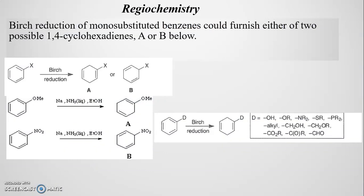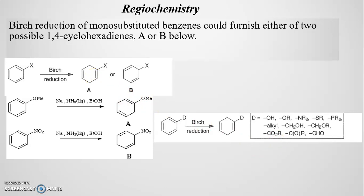The Birch Reduction of monosubstituted benzene could furnish either of two possible 1,4-cyclohexadienes, A or B. It has been found that electron-releasing groups give product of type A and electron-withdrawing groups give product of type B. Electron-releasing groups include OH, OR, NR2, SR, PR2, and alkyl. Groups such as CH2S and CH2O are actually electron-withdrawing groups, but they still give products of type A, and we will see the reason later.